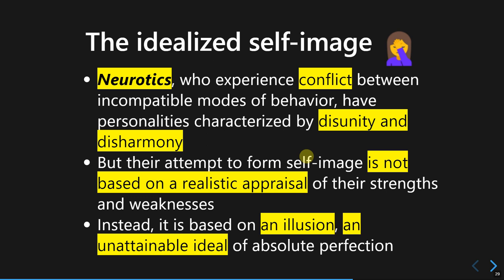People with neurosis experience conflict every day between incompatible modes of behavior. The three neurotic trends I explained in the previous section — the three ways to cope with basic anxiety — are actually incompatible with the real challenges people face. These personalities that arise from those three coping strategies result in a disunited and disharmonious personality, and people who use them risk failing to integrate their personality.